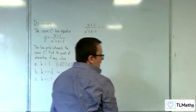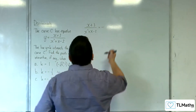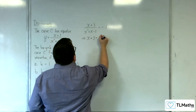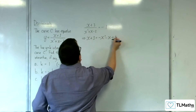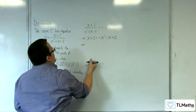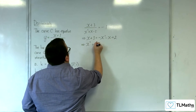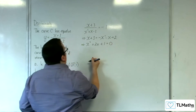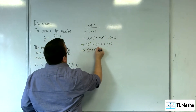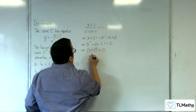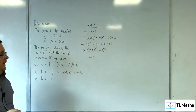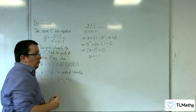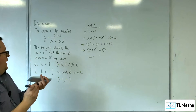Now let's look at k equals minus 1. So x plus 3 is equal to minus x squared minus x plus 2. Moving everything on to the left-hand side, we get x squared plus 2x plus 1 equals 0. This is x plus 1 squared, so x must equal minus 1. There is one point of intersection at minus 1, minus 1.